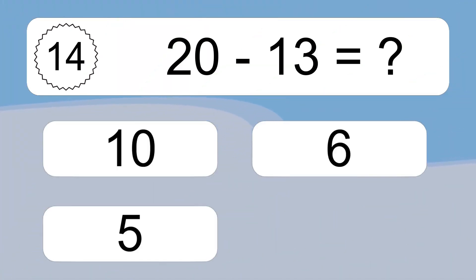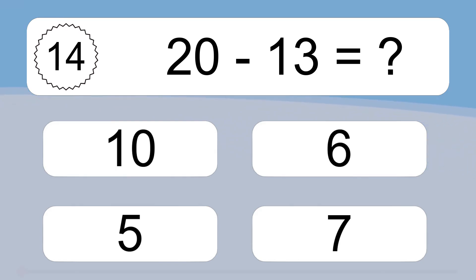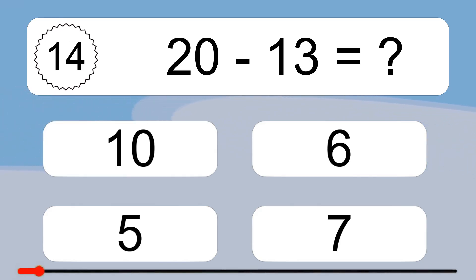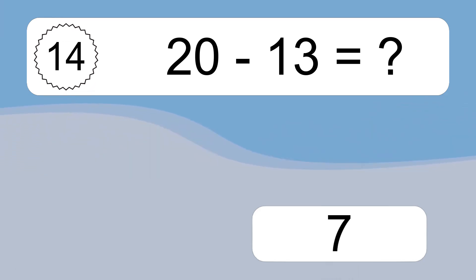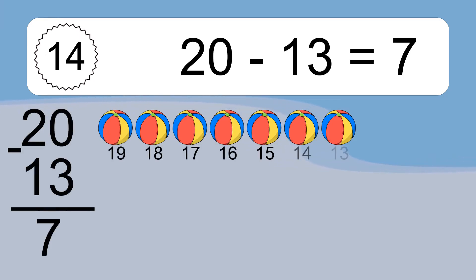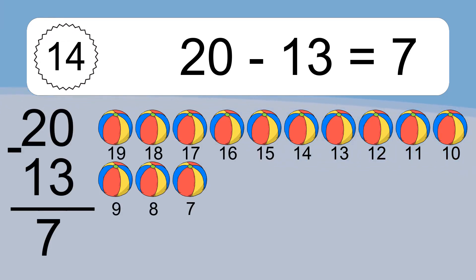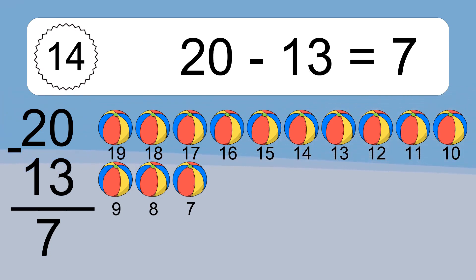20 minus 13 equals what? 20 minus 13 equals 7. Let's count it: 19, 18, 17, 16, 15, 14, 13, 12, 11, 10, 9, 8, 7.